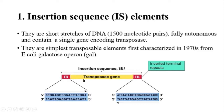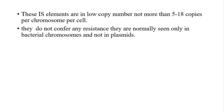In the coding region of the IS element, there is a single gene which encodes for transposase, and this protein transposase helps in the movement of insertion sequence elements. These IS elements are present in very low copy number, that is 5 to 18 copies per chromosome per cell.